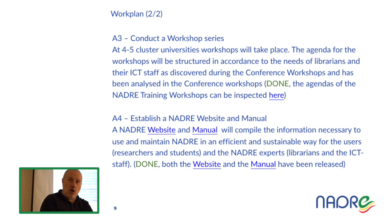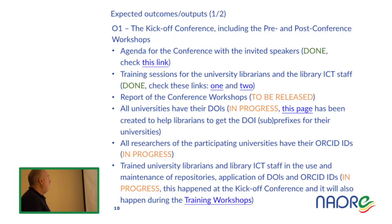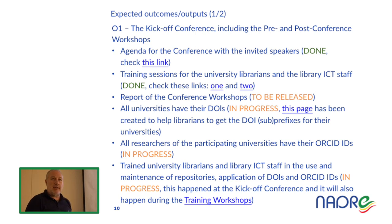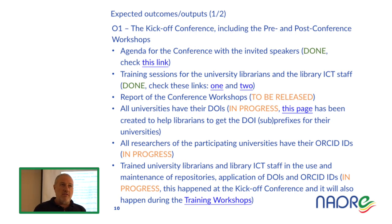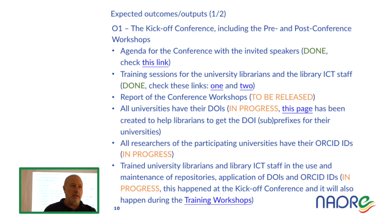Tomorrow you will do hands-on work using material already available on the NADRE website. The expected outcomes include: the kickoff conference — done; all universities should have their own digital object identifier prefixes; we have documentation and support to let universities tag every single record with a DOI, for discoverability, citability, findability, and reusability.